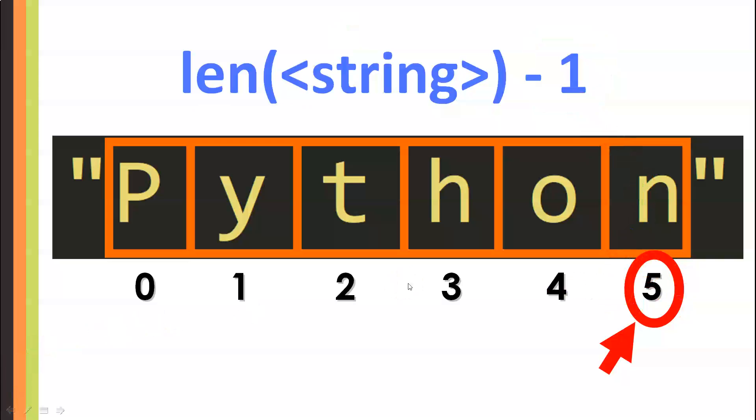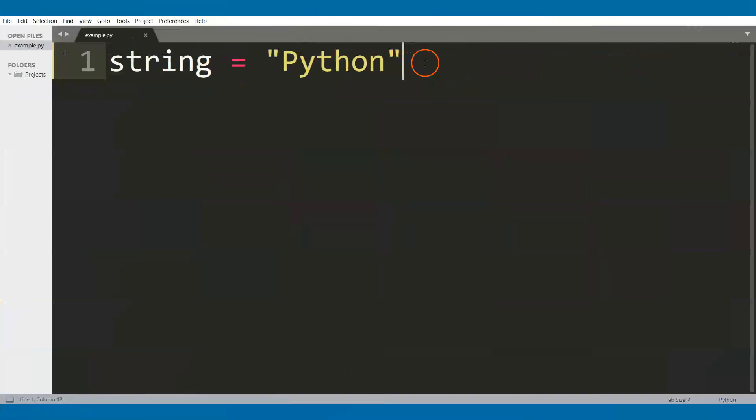Let's see this in practice with an example. Right here, we are defining a variable called string, and we are assigning the string Python to that variable using the assignment operator. To access the individual characters of the string, we need to use this syntax.